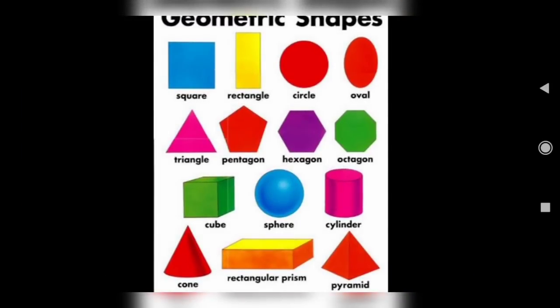What are the geometrical shapes? Square, rectangle, circle, oval, triangle, pentagon, hexagon, octagon, cube, sphere, cylinder, cone, rectangular prism, pyramid, etc.